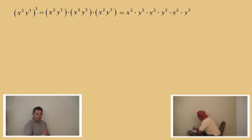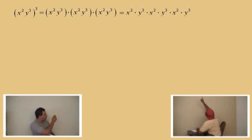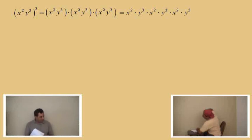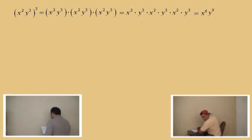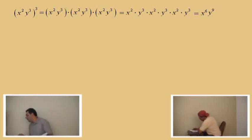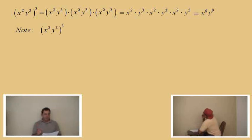Remember, x squared means x times x. We have y cubed times y cubed times y cubed in there — how many y's are there altogether, Charlie? Nine. There's nine of them all being multiplied together, and so that gives us y to the ninth. Notice that when we took x squared y cubed as the base and raised to the third power, we end up with x to the sixth times y to the ninth.